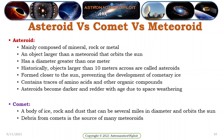Asteroids are mainly composed of mineral, rock, or metal — objects larger than a meteoroid that orbit the sun. Asteroids have a diameter greater than one meter; historically, objects larger than 10 meters across are called asteroids. Asteroids formed closer to the sun, preventing the development of cometary ice. They contain traces of amino acids and other organic compounds. Asteroids become darker and redder with age due to space weathering.